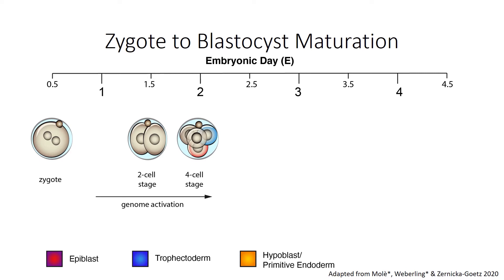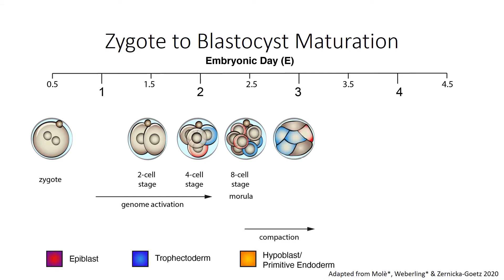At the same time the embryo activates its zygotic genome, degrading residual maternal mRNA, a process that is initiated at late zygote stages and completed at the two-cell stage. Until reaching the eight-cell stage, the single cells of the embryo, called blastomeres, are non-adherent and show equal potency despite slight differences in their expression levels. During the eight-cell stage the embryo undergoes the process of compaction, where the single blastomeres establish tight cell-cell junctions between neighboring cells.